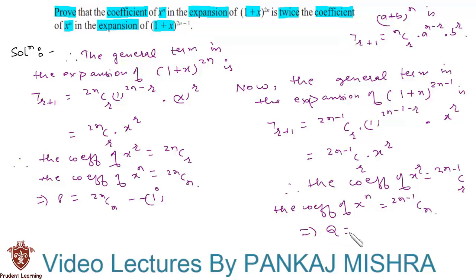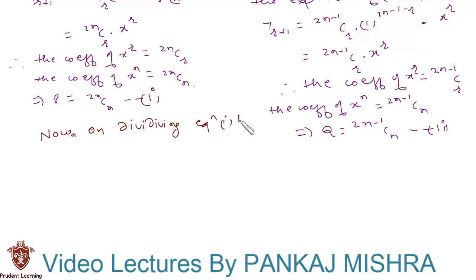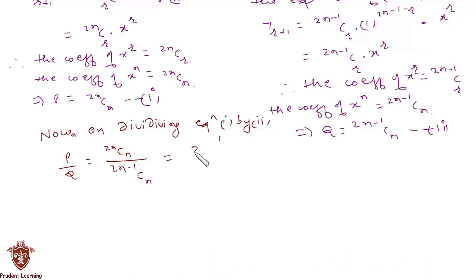Now on dividing equation 1 by equation 2, we have p upon q = 2nCn upon (2n minus 1)Cn. This is equal to 2n factorial upon (2n minus n) factorial times n factorial, divided by 2n minus 1 factorial upon (2n minus 1) factorial times n factorial.